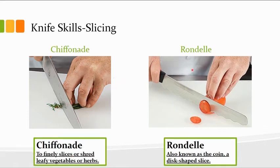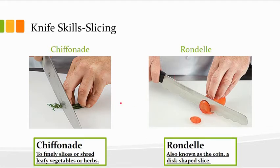The rondelle, also known as the coin, is probably the most common one that we've done in class in some of your other labs. It's a small disc-shaped slice. Depending on what you're cutting, it's either the size of a penny or the size of a quarter.